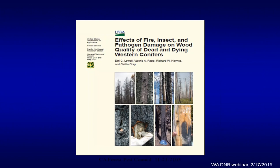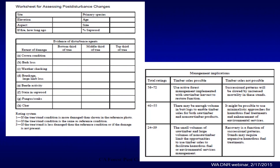Most of what I've talked about today you can find in this publication — it's an update of a previous synthesis that tried to provide guidance on whether it's worth pursuing active management in fire and insect killed stands, using visual clues as a kind of photo guideline. There's also a worksheet for assessing post-disturbance changes and what that means for management, plus reference photos you can use. Just a reminder: there are a lot of factors that help determine what happens to your tree after the fire is gone, and one size doesn't fit all. Thank you.